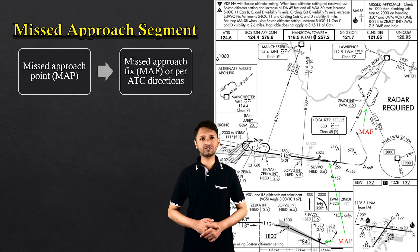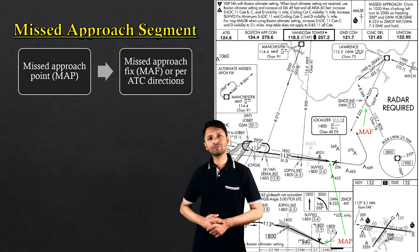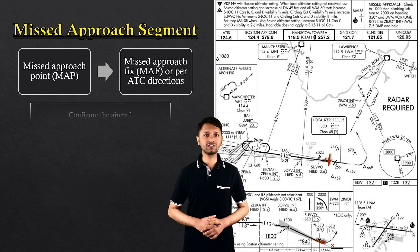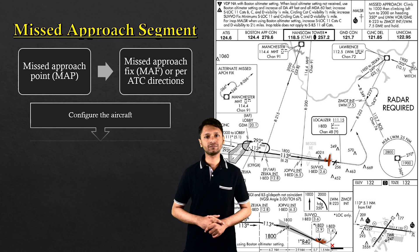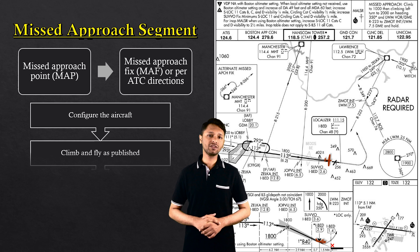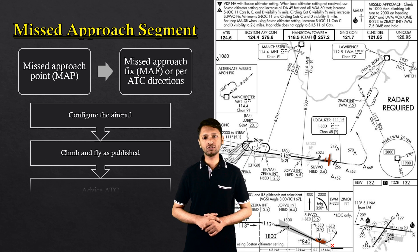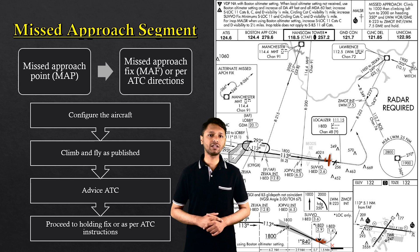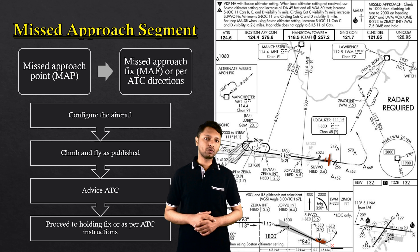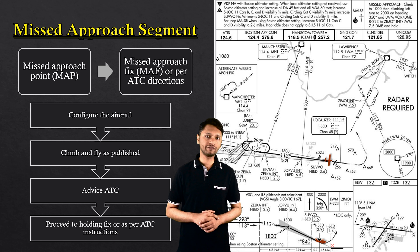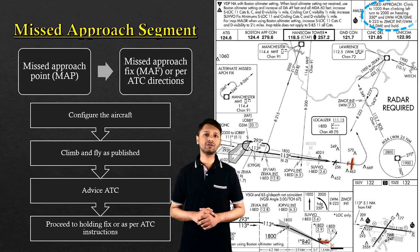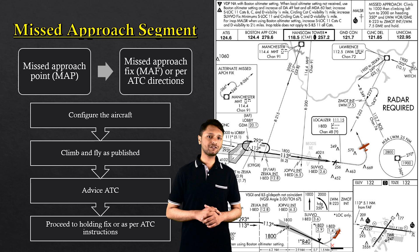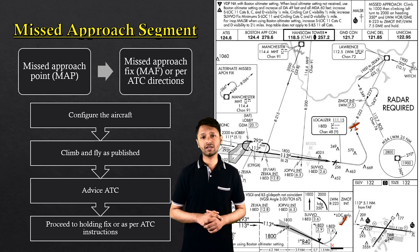The final segment of the precision approach is the missed approach segment. This segment starts from the missed approach point until the aircraft reaches the published missed approach fix or until further coordination with ATC is accomplished. When going missed, the pilot must configure the aircraft for the missed approach and continue to climb and fly as published. The pilot must also advise ATC upon executing the missed approach procedure so final instructions can be given. In our example, if the pilot decides to go missed at the decision height of 382 feet, the pilot executes the published missed approach by climbing to 1,000 feet, then executing a climbing left turn to 2,000 feet on a heading of 350 to intercept the 223 radial, taking the aircraft to the holding fix for a holding pattern.